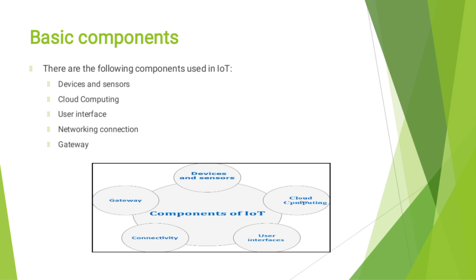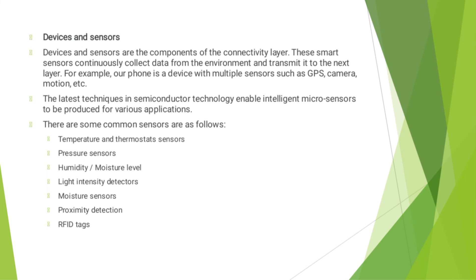This is the diagram for Basic Components of IoT. Devices and Sensors are the components of the connectivity layer. These smart sensors continuously collect data from the environment and transmit it to the next layer. For example, our phone is a device with multiple sensors such as GPS, camera, motion, etc. The latest techniques in semiconductor technology enable intelligent micro-sensors to be produced for various applications.